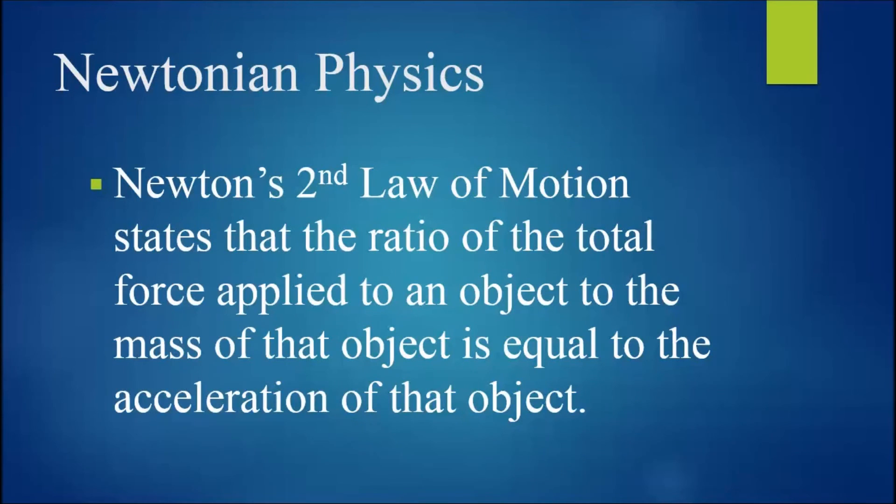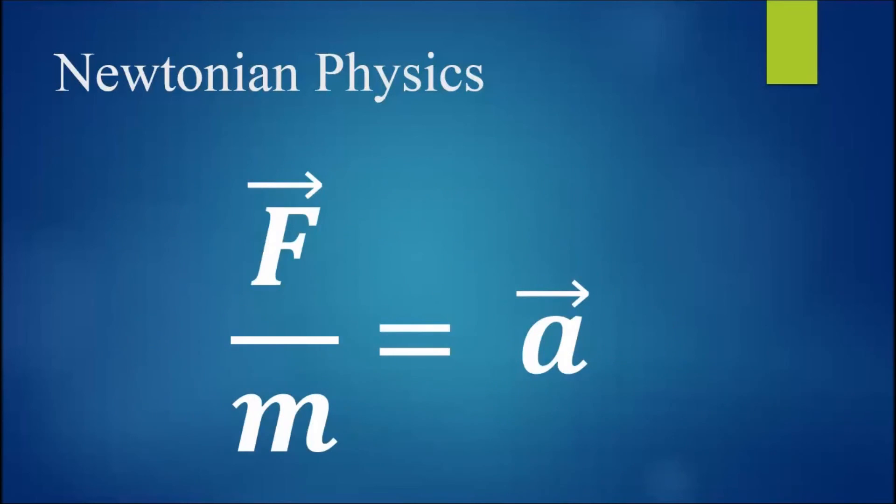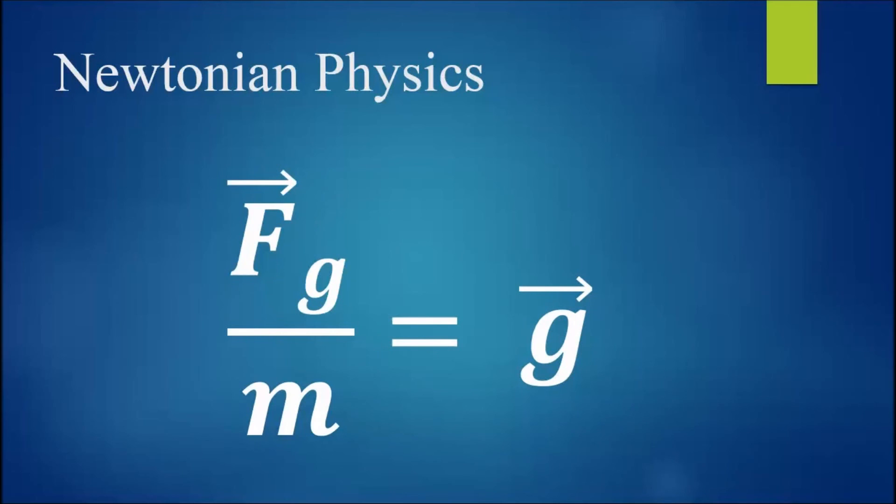Now, Newton's second law of motion states that the ratio of the total force applied to an object to the mass of that object is equal to the acceleration of the object. In symbols, we have the force applied to the object divided by the mass of the object equals the acceleration of the object. Now, Newton's second law applies to the gravitational force and so we have the gravitational force on an object divided by the mass of that object is equal to the acceleration due to gravity.